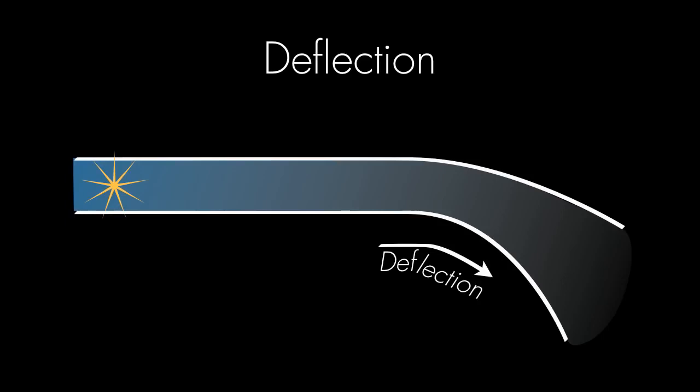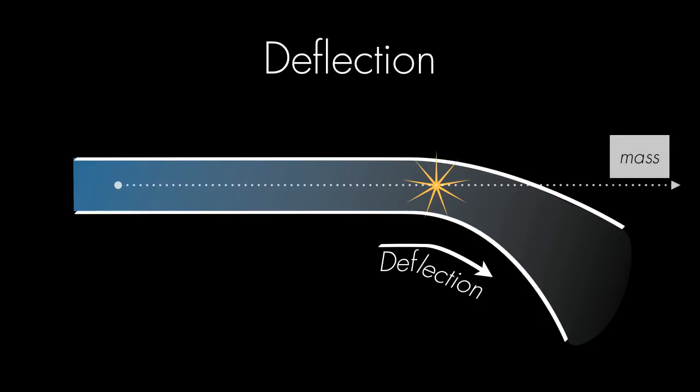The deflection stage is the heart of the mass spectrometer. When we accelerate an ion, it would like to keep moving in a straight line. This tendency of the particle to move in a straight line, its momentum, is proportional to its mass.